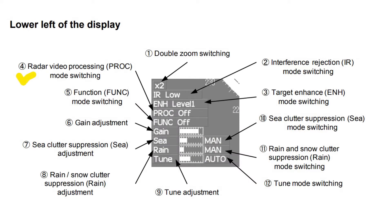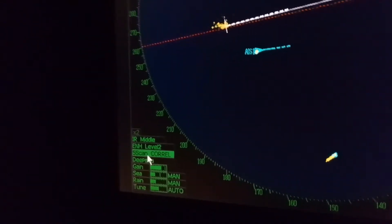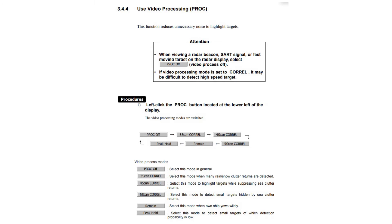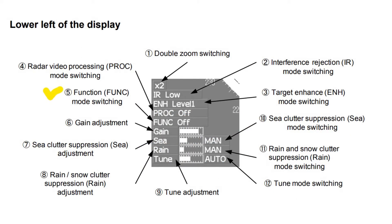Radar video processing (PROC) mode switching: this function reduces unnecessary noise to highlight targets. PROC OFF — select this mode in general. 3-scan correlate — select this mode when many rain/snow clutter returns are detected. 4-scan correlate — select this mode to highlight targets while suppressing sea clutter returns. 5-scan correlate — select this mode to detect small targets hidden by sea clutter returns. Remain — select this mode when own ship yaws wildly. Peak hold — select this mode to detect small targets with low detection probability.